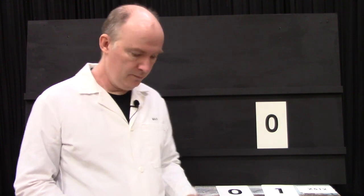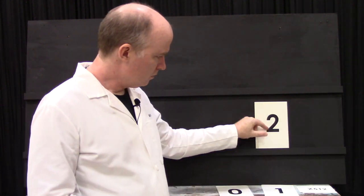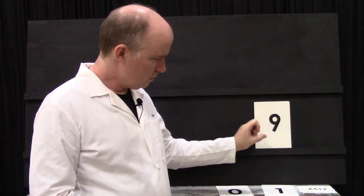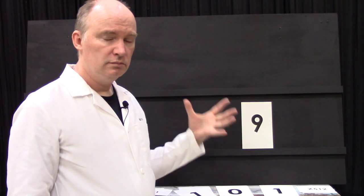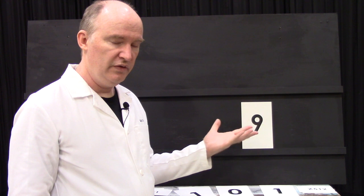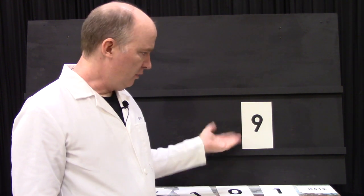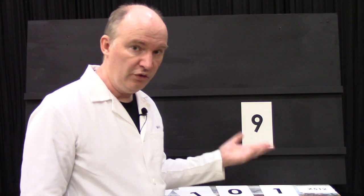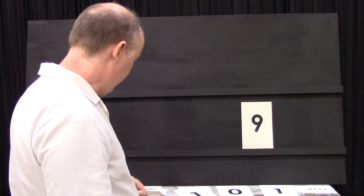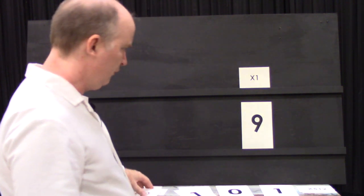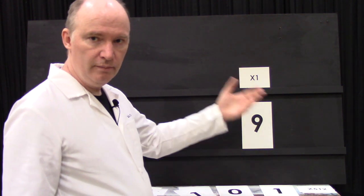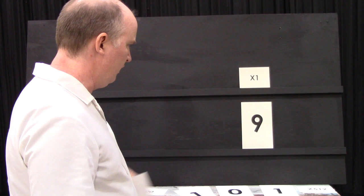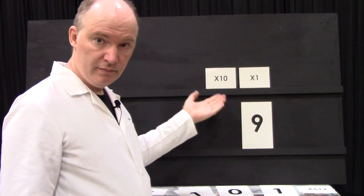To count in decimal, you start with zero. You have nothing, no things. Then you go from one to nine. Now when you get to nine, you've run out of numbers unless you're Babylonian. So what we do is we then say that this is the ones place.